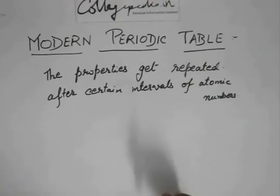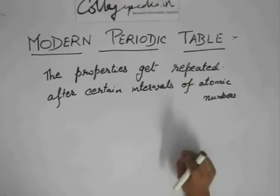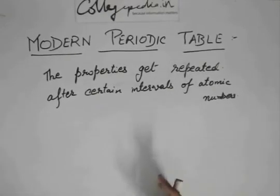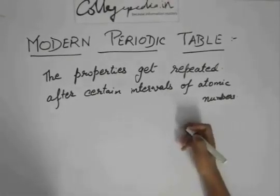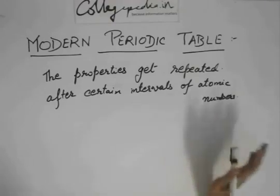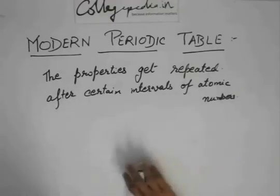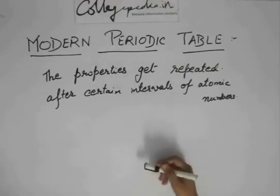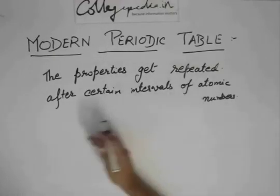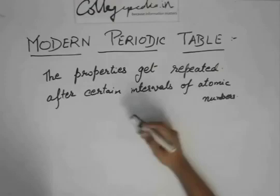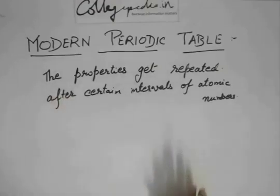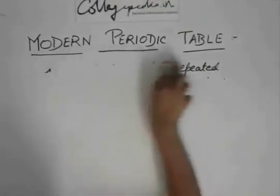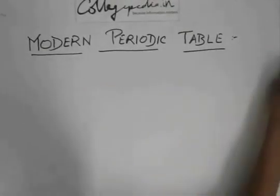Generally, the atomic mass also increases with the atomic number, but it is not the case. It is not true for every element. There are lots of places where it decreases, where it remains constant or where it repeats. So it is better to say that the properties get repeated after certain intervals of atomic numbers. We will be dealing with atomic numbers instead of atomic masses.